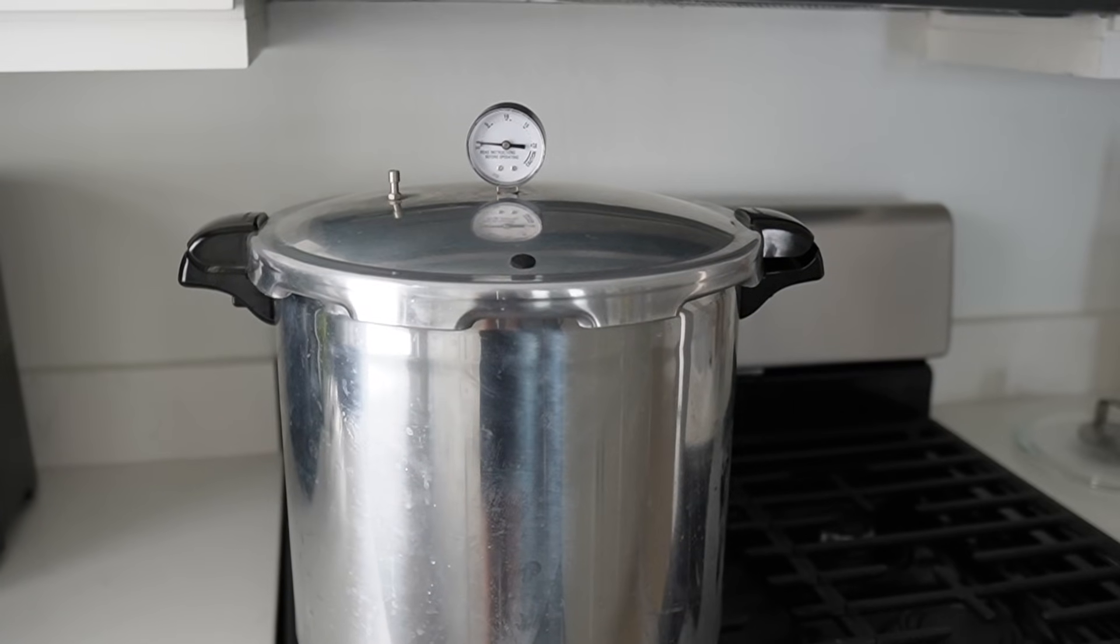I adjust the pH again to 5.7 and then I follow the steps outlined before to sterilize the multiplication media inside of the pressure cooker. Now you could attempt the next part of this video inside of a still air box. I am going to be using a flow hood.